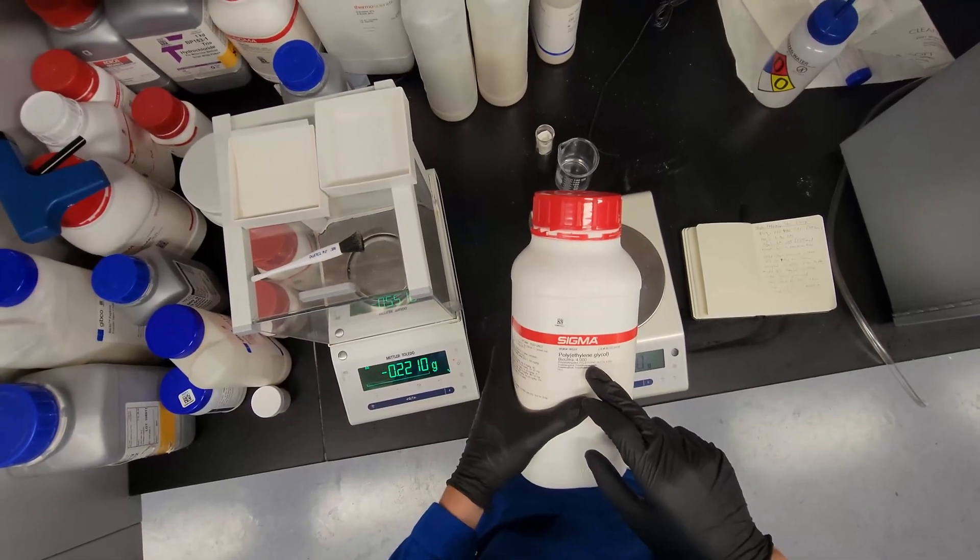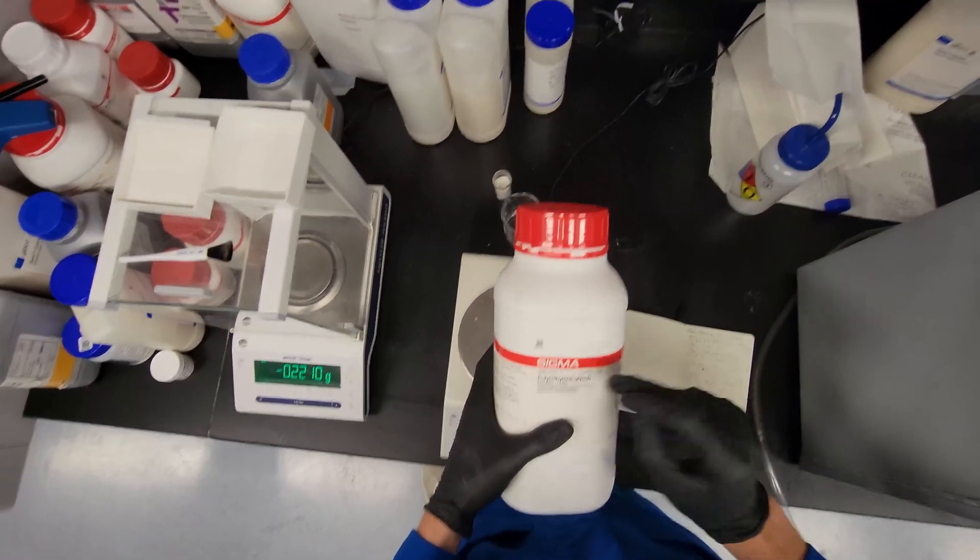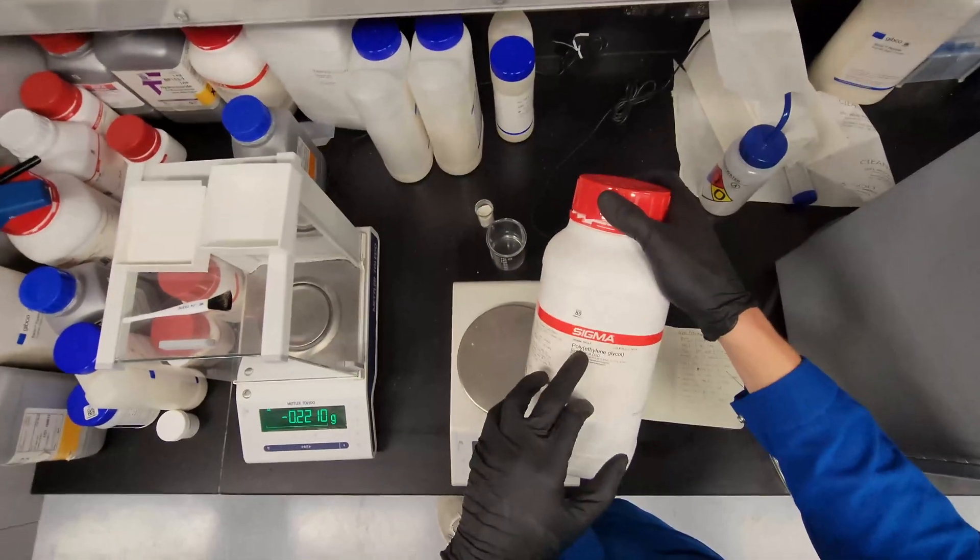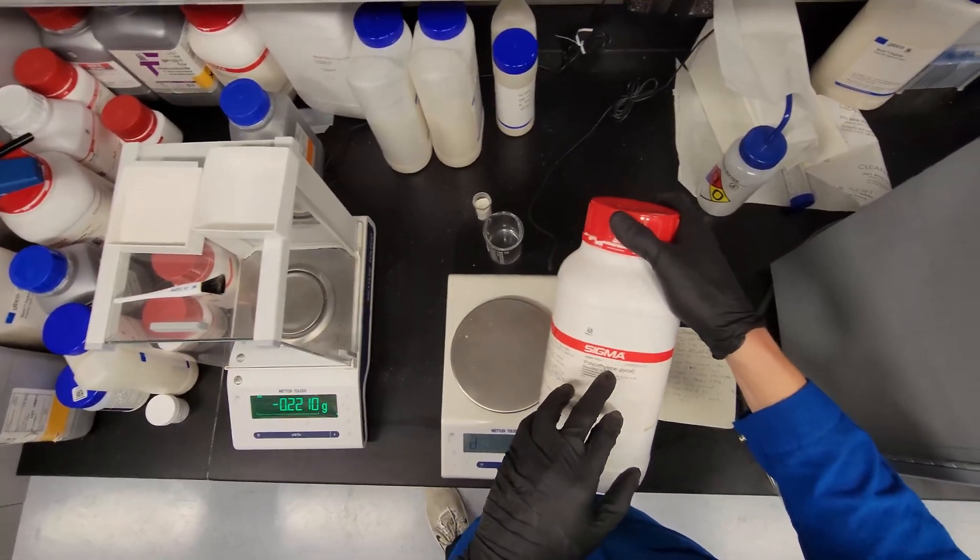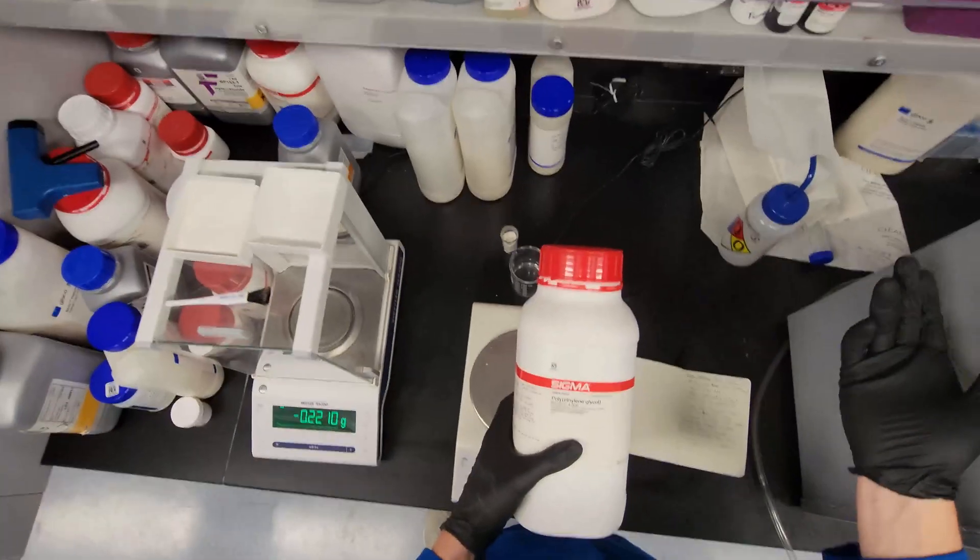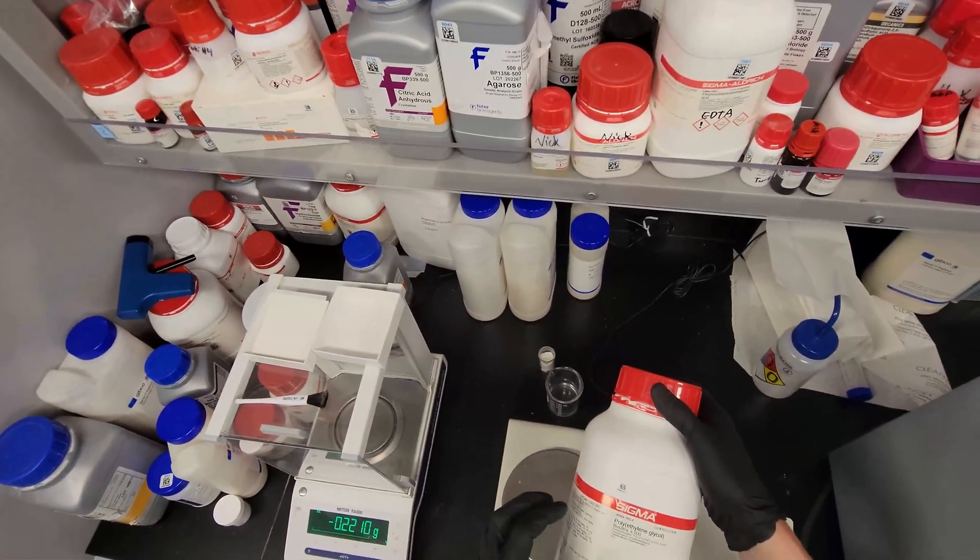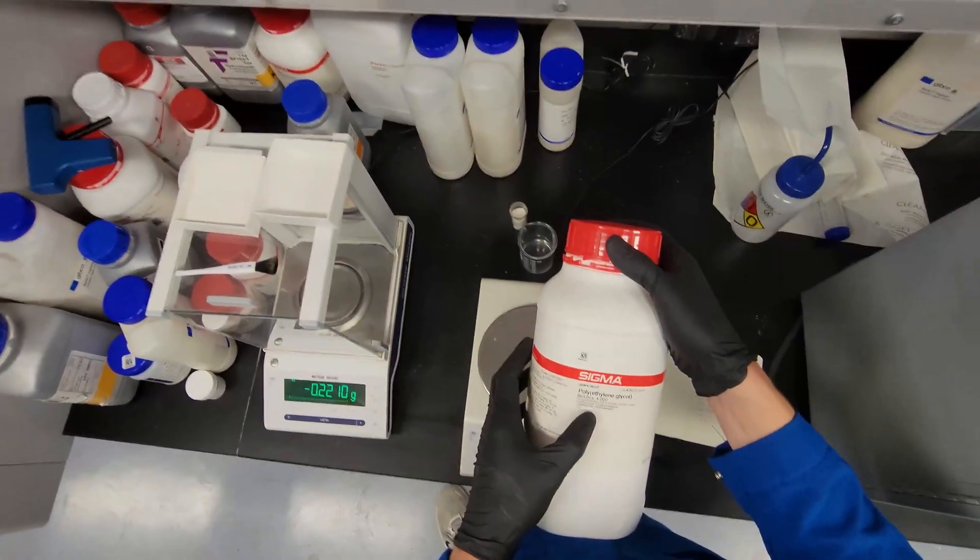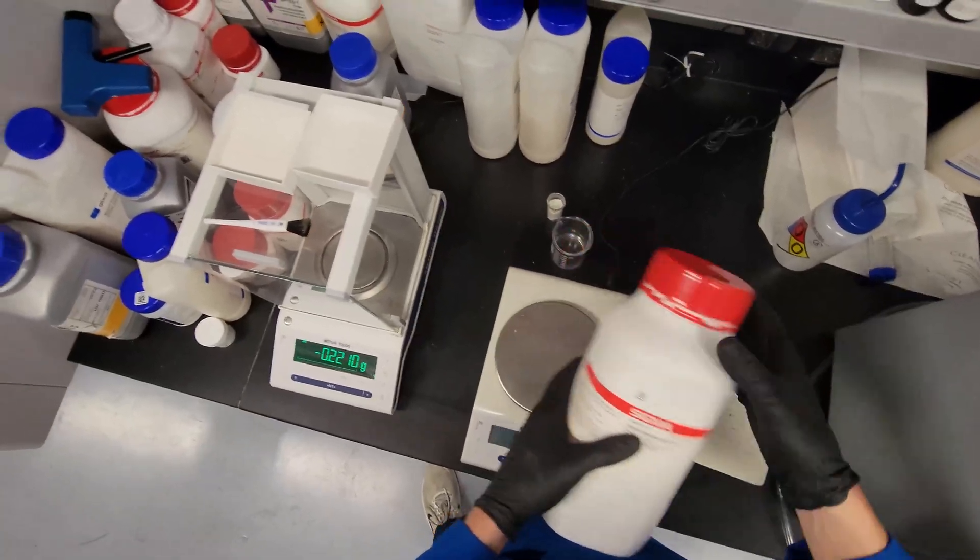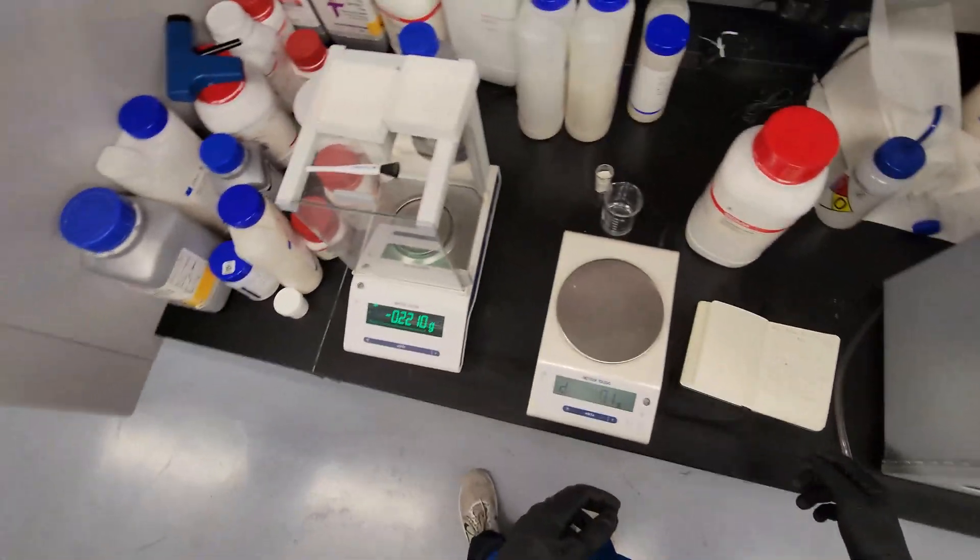So here we've got the PEG-4000. In the lab, we also have different molecular weights of polyethylene glycol. Basically it's a polymer, so it's got poly in the name, with monomers of ethylene glycol. And so the average molecular weight in the 4000 is 4000 grams per mole. Basically it's just different sizes of PEG. We found that this size of PEG works best for our applications.